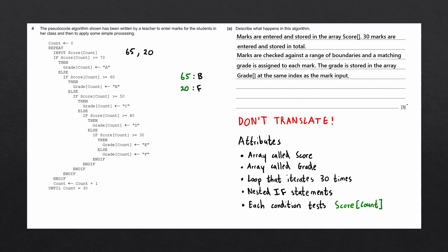You may notice this question is only worth three marks, but we've given quite a bit of information here — about six marks worth of points. You only need to write down three points about this algorithm. The main takeaway is to not just translate each line of pseudocode into English, but instead to describe what the algorithm accomplishes and how it does it.